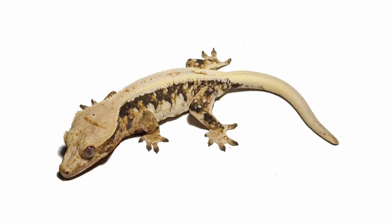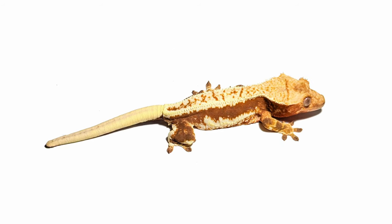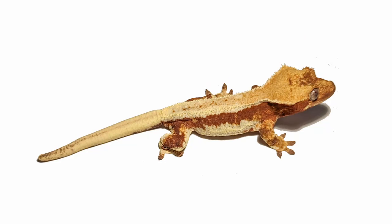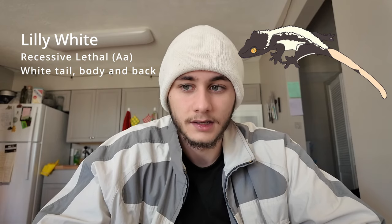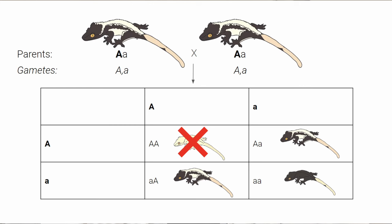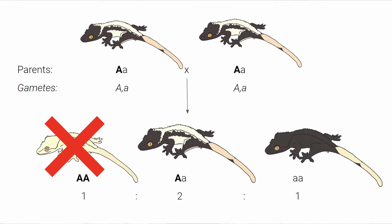Lilywhite is called incomplete dominant in the community, but I call it recessive lethal because that is the name of the mutation. It's not fully accurate to call it incomplete dominant, because if it were, big A/big A would produce something alive — but in this case big A/big A is dead. In a cross between a lily white and a lily white (both big A/small A), the offspring are: big A/big A (dies), big A/small A, small A/big A, and small A/small A. One out of four kids dies, two out of four are lily whites, and one out of four is not lily white and does not carry the gene.